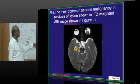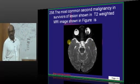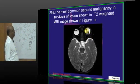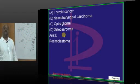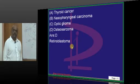What is the most common second malignancy in the people who survive with this lesion? So it is retinoblastoma. This is the retinoblastoma. Typically in them you find osteogenic sarcoma is the second most common malignancy that is found in people who have got retinoblastoma.